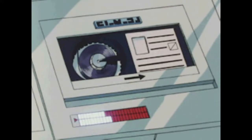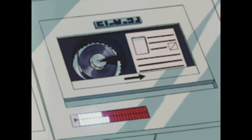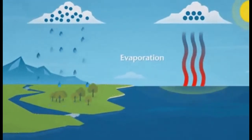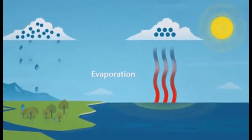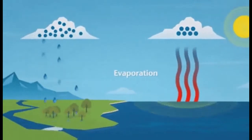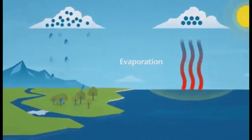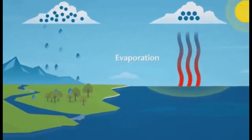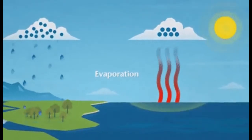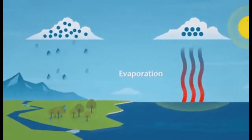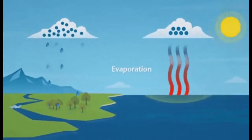Hydroelectric power is using water to power machinery or make electricity. Water constantly moves through a vast global cycle, evaporating from lakes and oceans, forming clouds, precipitating as rain or snow, and then flowing back down to the ocean. And what drives this cycle? The sun.